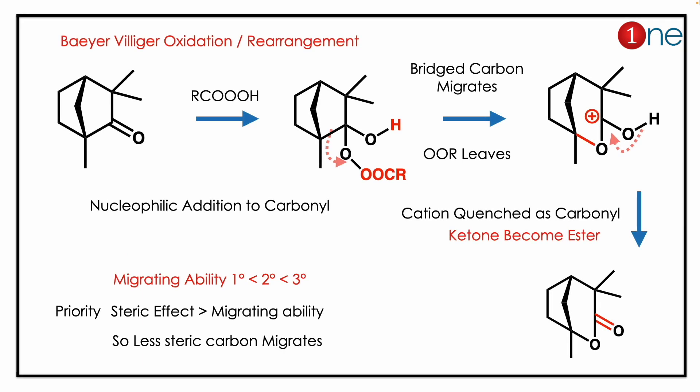By looking at the ketone and peracid, you might realize this is a Baeyer-Villiger oxidation — a rearrangement reaction. The first step is nucleophilic addition to the ketone, so you have H+ and RCO minus addition. Then the O-O bond is weaker, so carbon has to migrate. In a normal case, the tertiary carbon would migrate, but due to steric reasons, here the rigid carbon migrates.